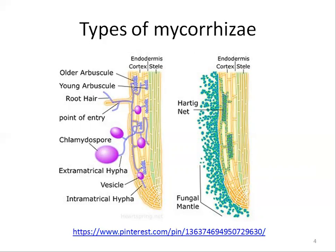While the hyphae of endomycorrhiza fungi penetrate the cell wall and invaginate the cell membrane. In this picture you can see two different types of mycorrhiza, the most common types. In the endomycorrhiza association you can see vesicles and arbuscules, shown by a longitudinal section of the root.